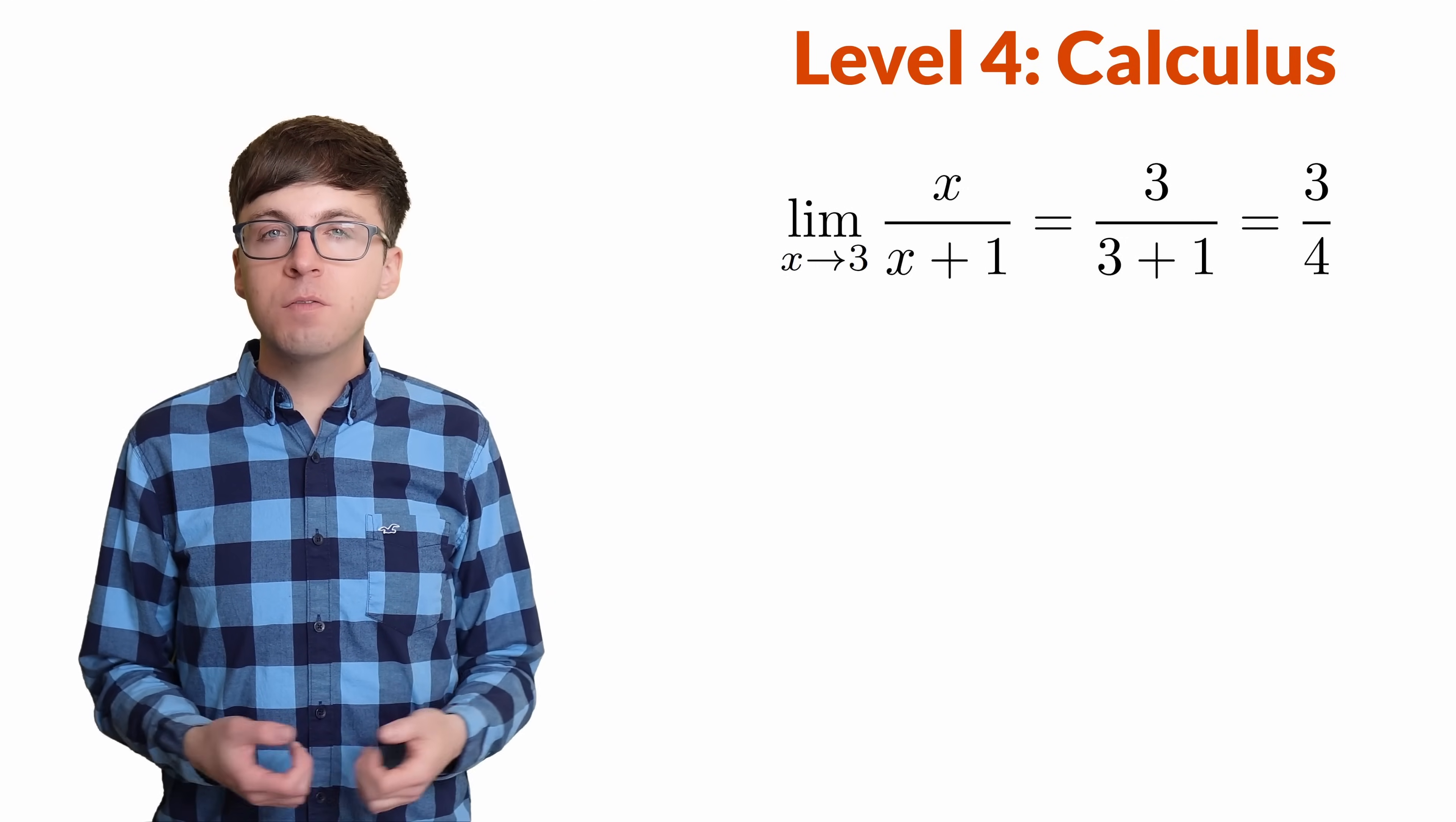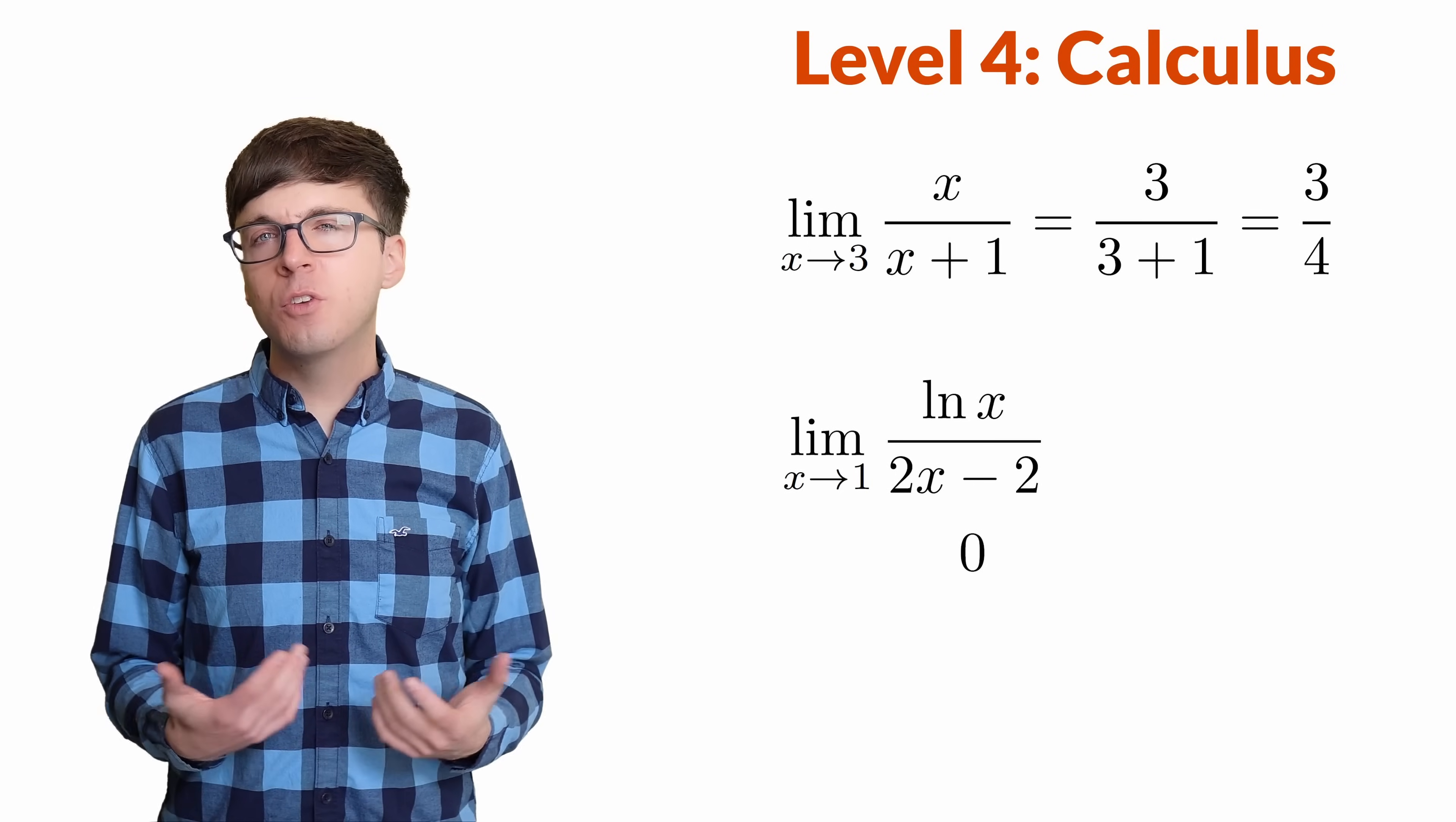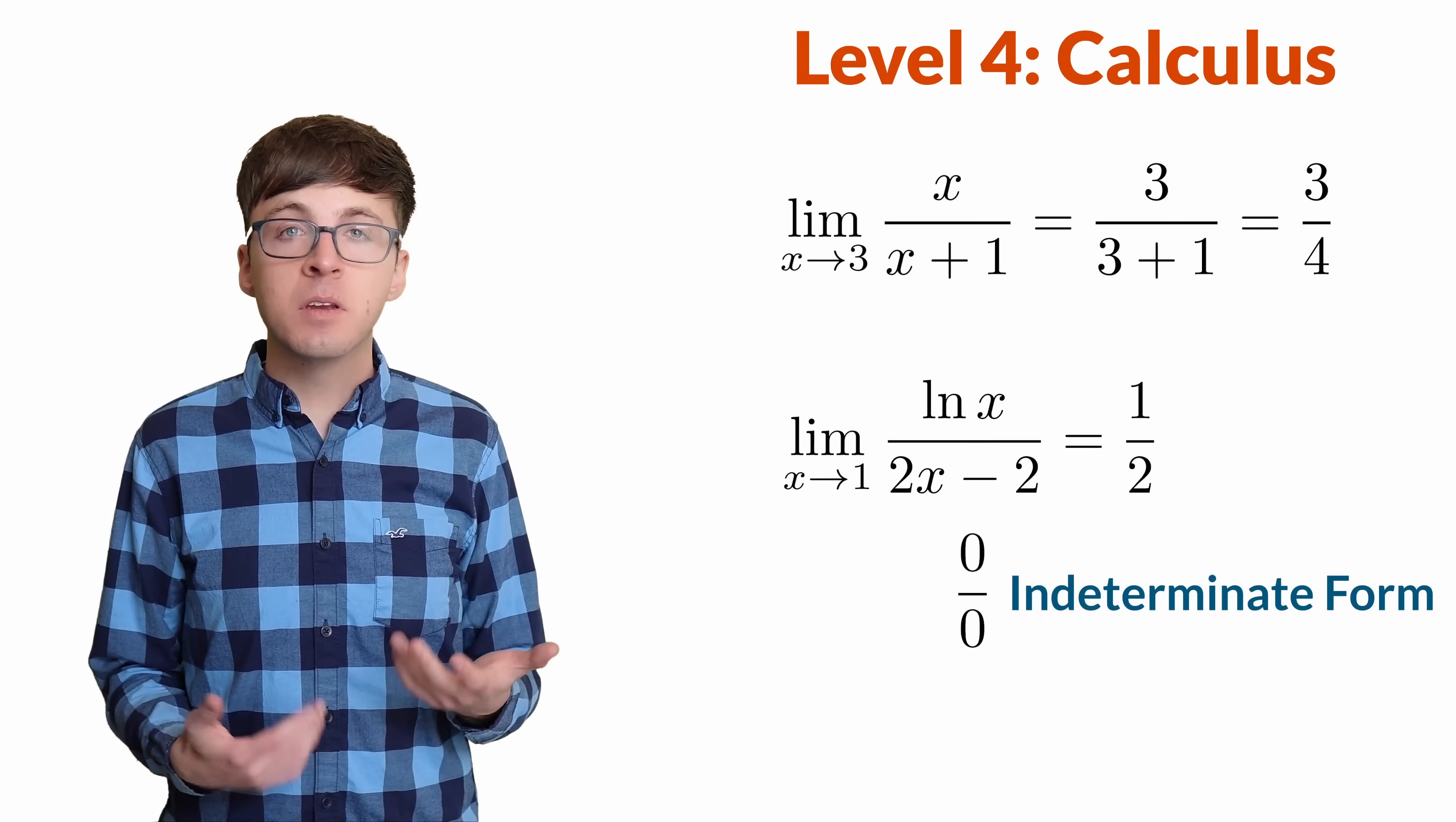But limits get trickier when we encounter indeterminate forms. For example, say we want to find the limit of log of x times x over 2x minus 2 as x approaches 1. If we try to plug in x equals 1, we get log of 1, which is 0, divided by 2 times 1 minus 2, which is also 0. 0 divided by 0 is an indeterminate form. Limits that look like this can evaluate to any real number, or even infinity, and so we have to do some extra work to figure them out. It turns out that limit is 1 half.